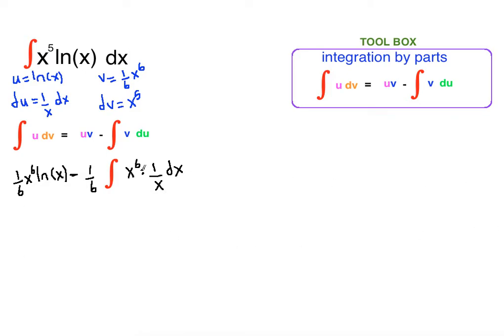Here we can do reduction. x to the sixth divided by x is x to the fifth. Let's clean up. So 1 sixth x to the sixth ln of x minus 1 sixth integral of x to the fifth dx.